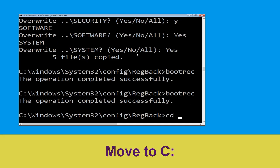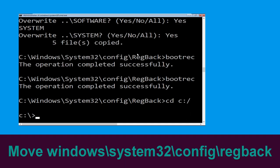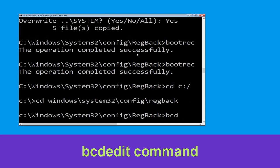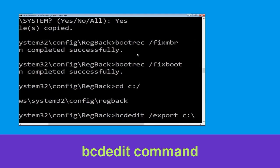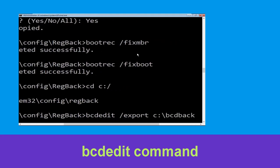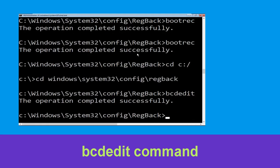Type cd c:\ and hit enter. Then type cd windows\system32\config\RegBack and hit enter. Now type bcdedit /export c:\bcd_back_backup and hit enter to execute.